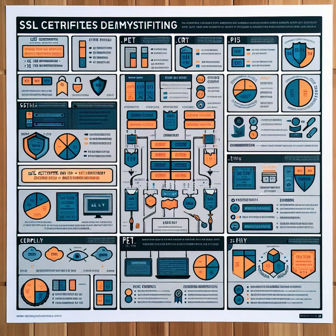Next on our list are P12 files, also known as PKCS#12 files. These files serve as encrypted storage for both the private key and the corresponding certificate. They are frequently used in Windows-based environments and are password protected. Their purpose is to provide secure distribution and backup of SSL certificates.